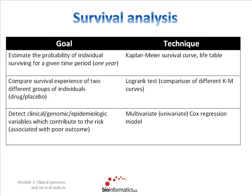The main goals of survival analysis are these. First, can we estimate the probability of an individual surviving for a given time period — say, one year? For example, you have a cohort of patients of a certain age treated with a certain drug. You have recorded survival times and clinical outcome. Using that data, you can predict the survival probability of a new patient coming in. The method used for this purpose is a Kaplan-Meier survival curve or a life table.